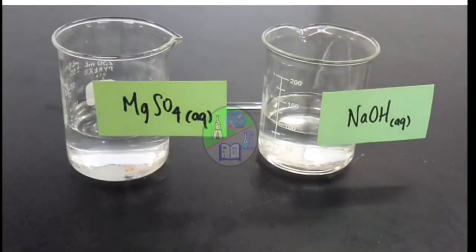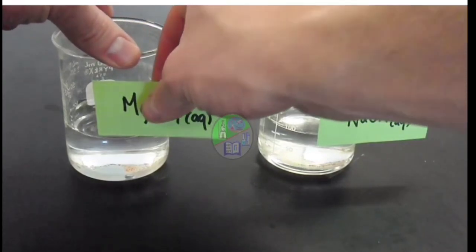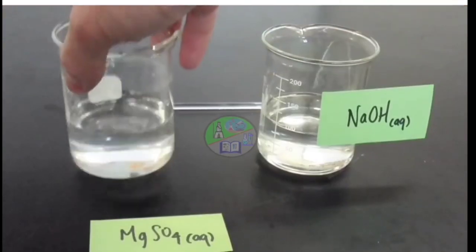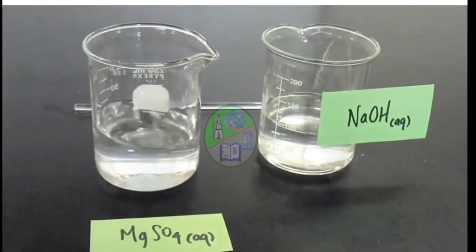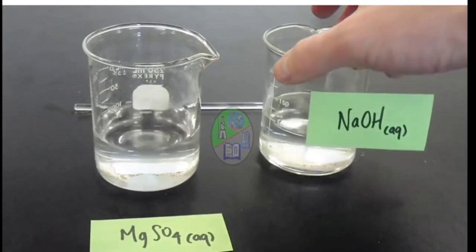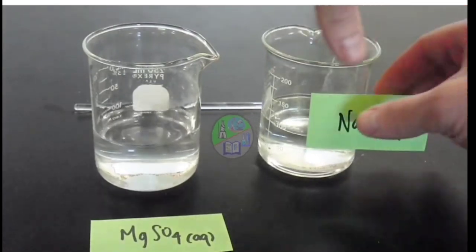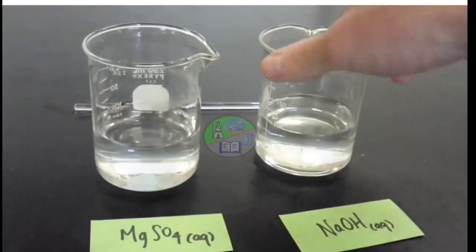So, here two beakers have been taken and the beaker present contains magnesium sulphate, a colorless solution, and this beaker contains a colorless solution of sodium hydroxide.